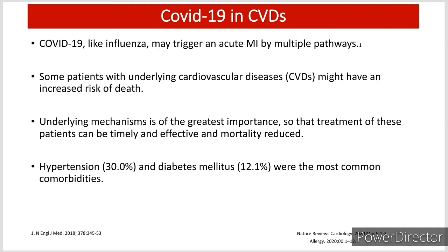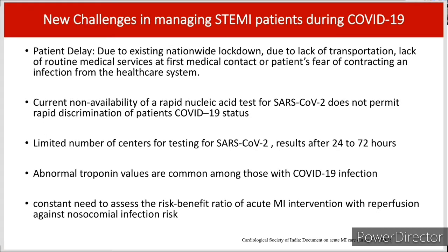Hypertension accounts for approximately 30% and diabetes for 12% as comorbidities in COVID-19 patients, along with CRF and malignancy. We will see the new challenges in managing ST-elevation myocardial infarction patients during COVID-19. Already in our country, we have many challenges in handling myocardial infarction patients, and on top of that, COVID-19 has created additional burden.